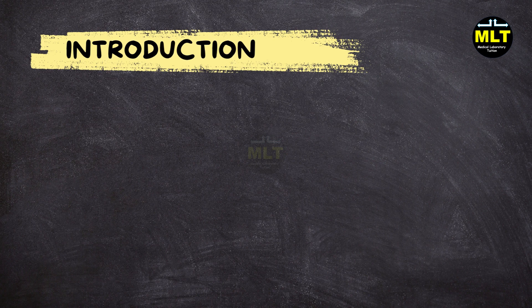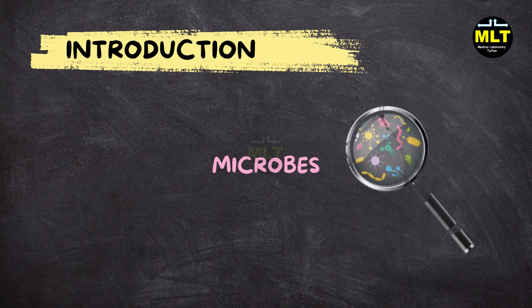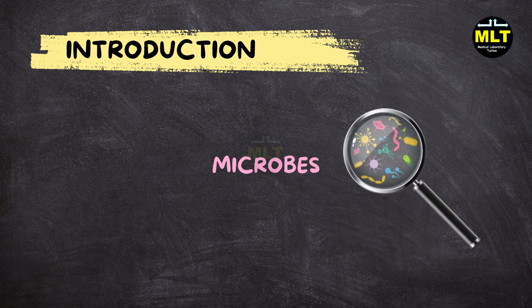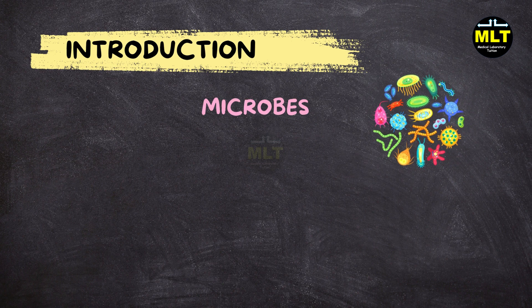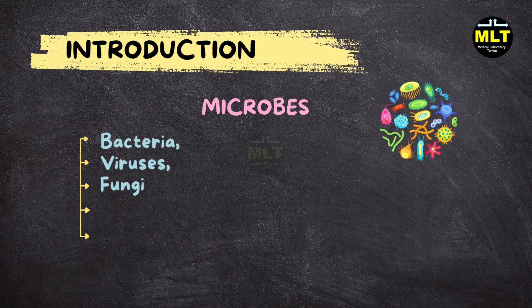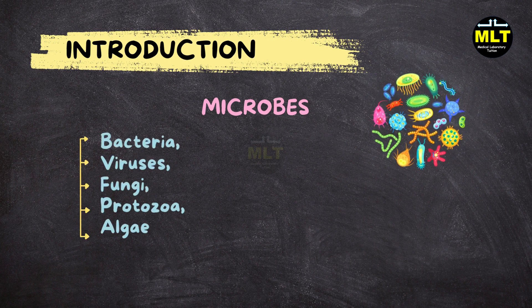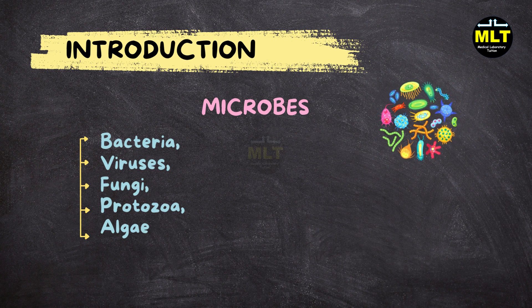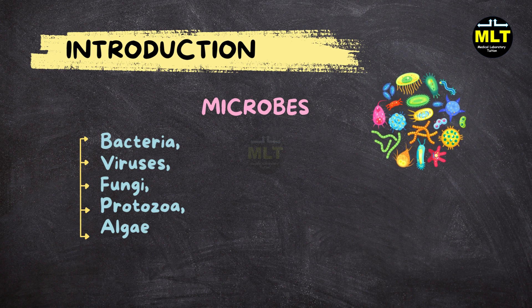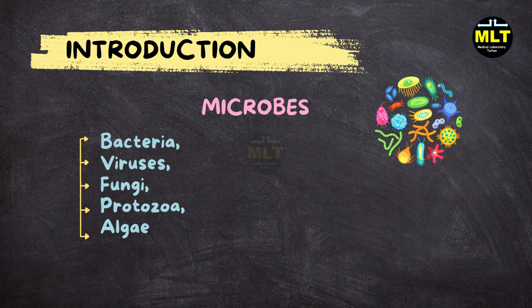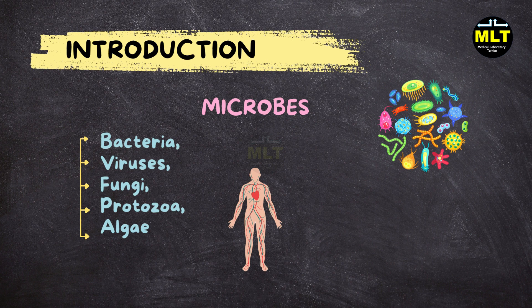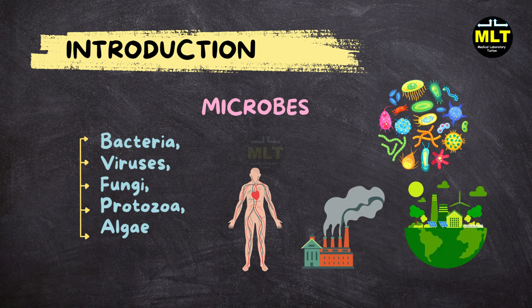Introduction to microorganisms. Microorganisms, often referred to as microbes, are tiny living organisms that can only be seen with a microscope. They encompass a diverse range of life forms, including bacteria, viruses, fungi, protozoa, and algae. Despite their small size, microorganisms play crucial roles in various ecosystems, impacting human health, industry, and the environment.